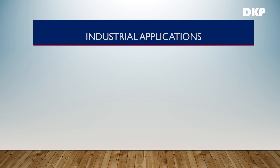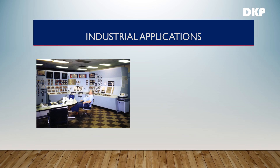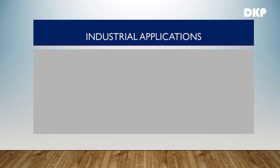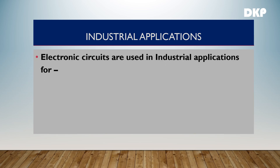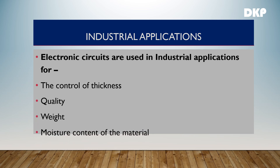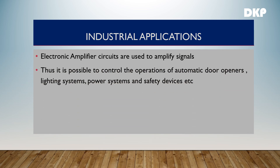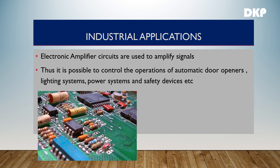Now let us see the applications of electronics in industries. The usage of automatic control systems is increasing day by day. Electronic circuits are used in industrial applications for the control of thickness, quality, weight, and moisture content of materials. Electronic amplifier circuits are used to amplify signals — if the signals are very feeble, they can be amplified using electronic amplifiers. The amplified signals are used to control the operations of automatic door openers, lighting systems, power systems, and safety devices.